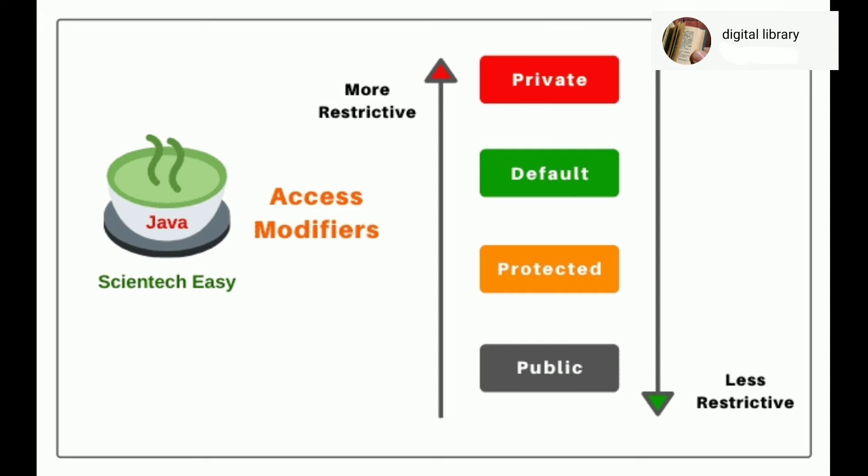Private access modifier. This is the type of modifier that accommodates the most restrictive fields in the program. It cannot be accessed, and thus cannot also be used by any command or function.